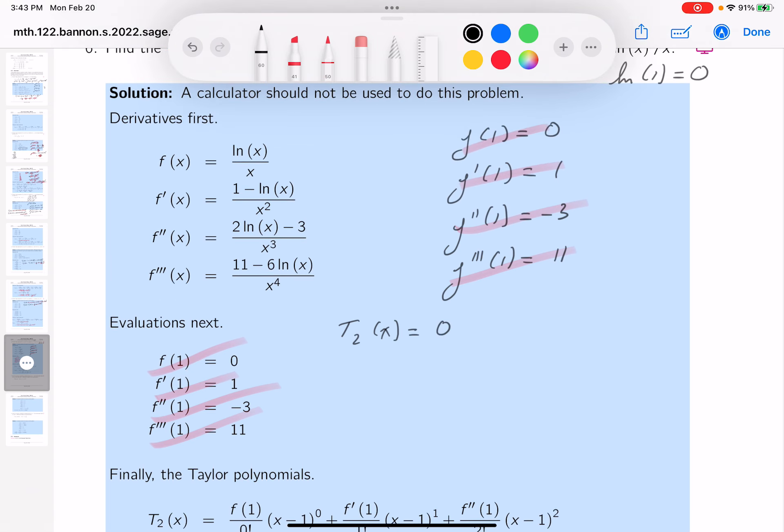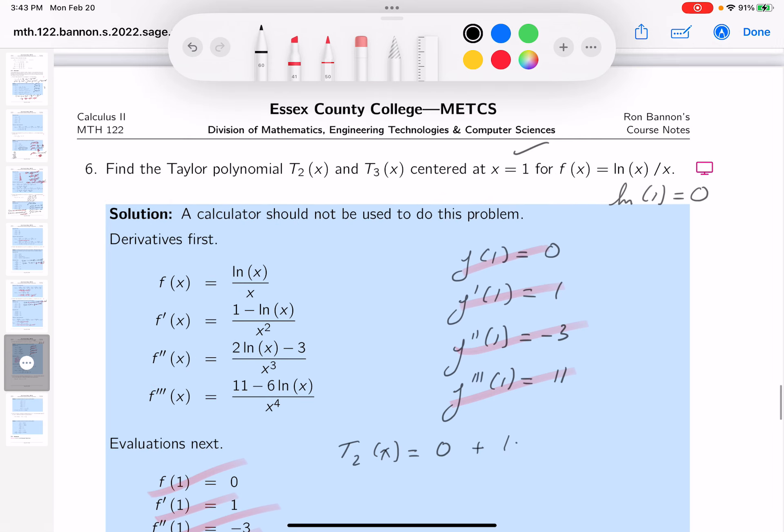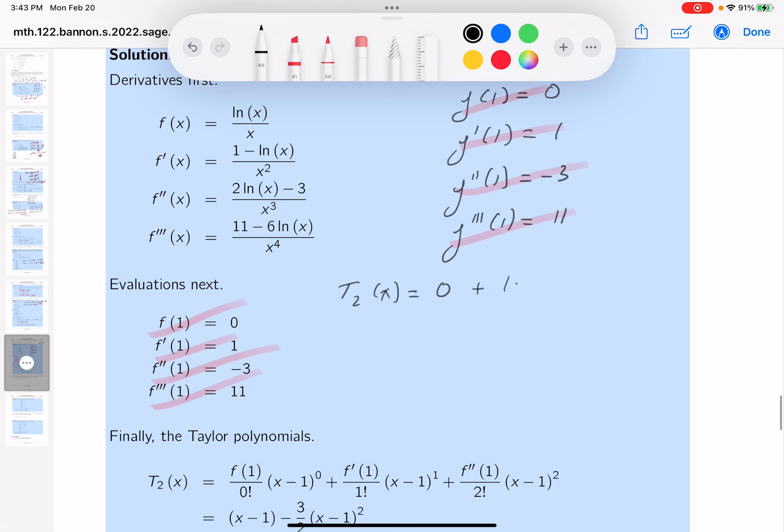Well, we get 0. I'll write that down, by the way. And then we're going to get plus f prime of 1 is 1. And my center, again, was 1. So, it's going to be x minus 1 plus minus 3. I'll clean this up in a second, by the way. x minus 1 squared.